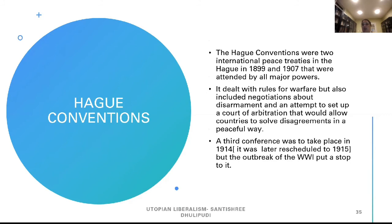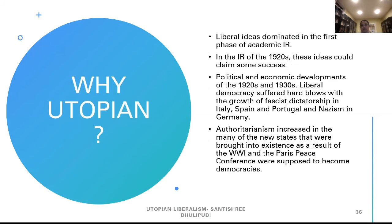The Hague Conventions were two international peace treaties, in The Hague in 1899 and 1907, attended by all major powers. They dealt with rules for warfare but also included negotiations about disarmament and an attempt to set up a court of arbitration to allow countries to solve disagreements peacefully. The third conference was to take place in 1914 but was rescheduled; the outbreak of World War I put a stop to it.